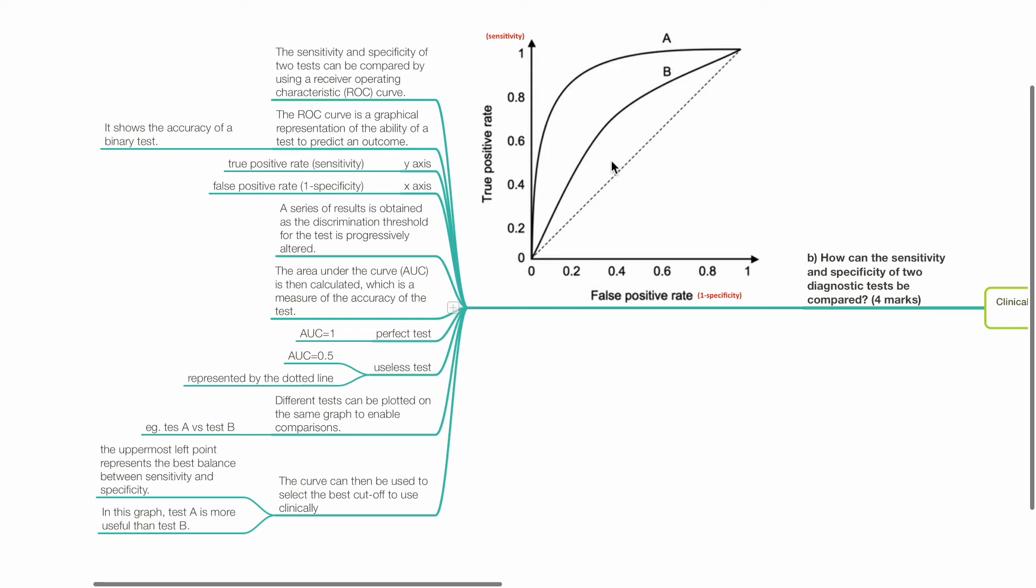If AUC equals 1, this is a perfect test. If AUC equals 0.5, this is a useless test, which is represented by the dotted line.